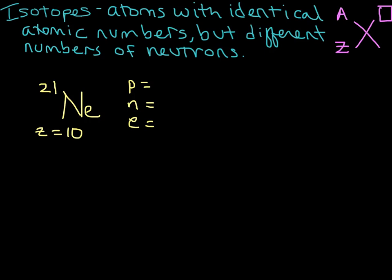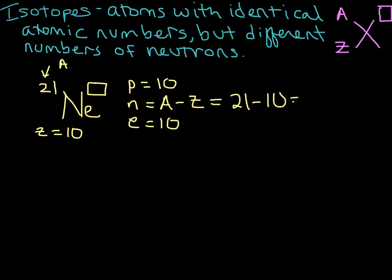The atomic number is equal to the number of protons for this atom. So we have 10 protons, and we see that there is no charge here. For a neutral atom, the number of protons is equal to the number of electrons, so we know that we have 10 electrons also. To figure out our neutrons, we have to use our atomic mass A. The number of neutrons is always going to be A minus Z, so that's 21 minus 10, giving us 11 neutrons.